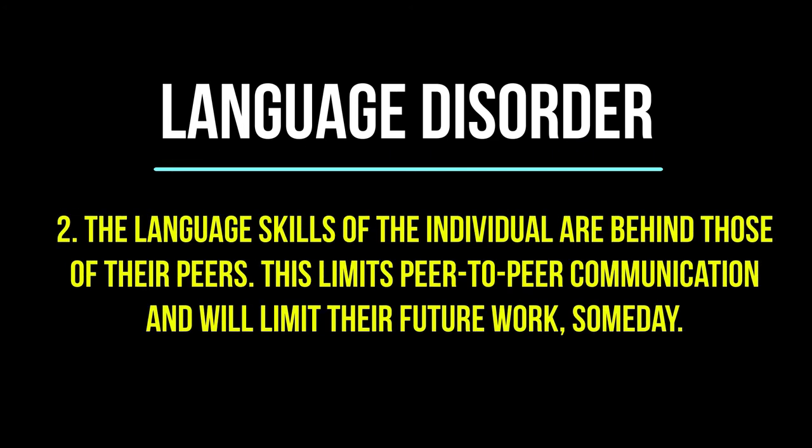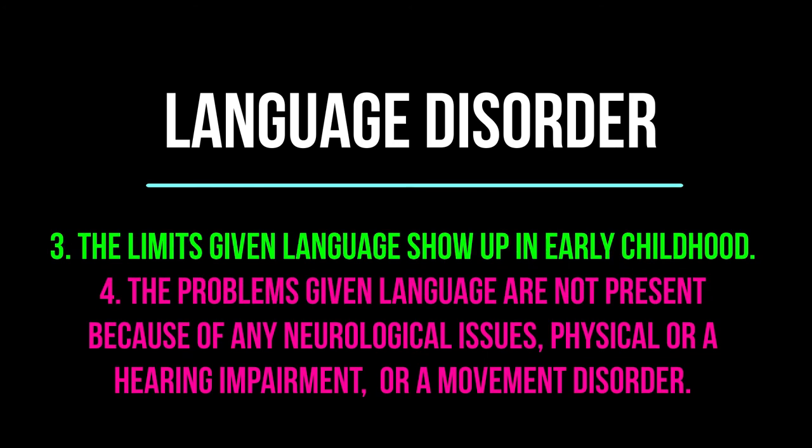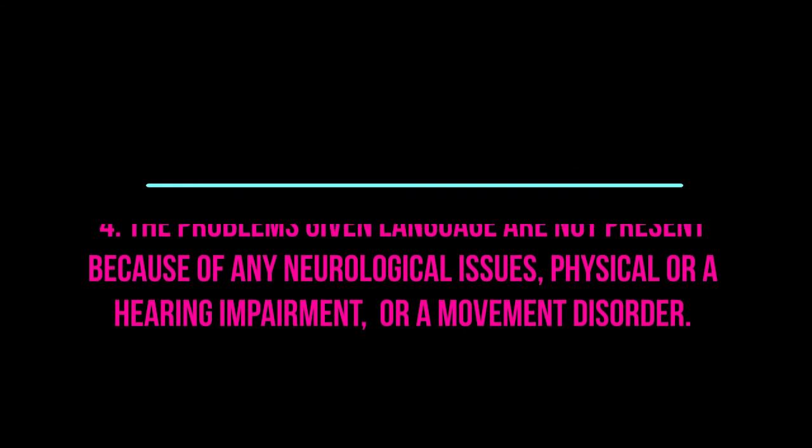Number two, when comparing the language skills of the individual to their peers, they're going to be much lower than their peers. This will definitely limit peer-to-peer communication and cause limitations on the type of work the child can eventually do. Social skills will be limited as well as academic potential. Number three, the limitations in language and its usage show up in early childhood. And number four, the problems with language are not present because of neurological issues, physical or hearing impairment, physical problems with movement, or any other type of health condition.